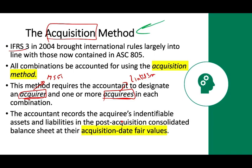The accountant records the acquiree's identifiable assets and liabilities in the post-acquisition consolidated financial statements at fair value. When Microsoft bought LinkedIn, everything — receivables, inventory, property, plant and equipment, patents, and other intangibles — is reported at fair market value. What happens if we pay too much for the company and we cannot identify why we paid that premium? Then what we have is goodwill.